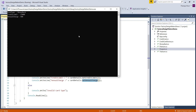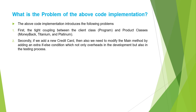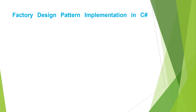The way we implemented the code introduces two problems. The first problem is tight coupling between the client class (the Program class) and the product classes (MoneyBack, Titanium, and Platinum). If we make any changes in the product classes, we also need to make changes in the client class. The second problem is that if we add a new credit card, we need to modify the main method by adding an extra if-else condition, which adds overhead in both development and testing.